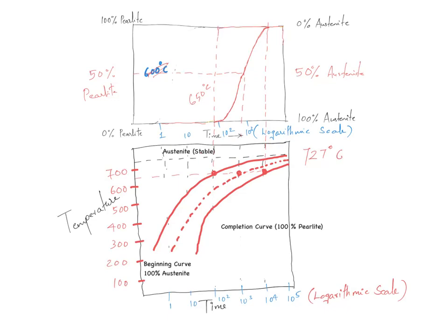The logarithmic scale on the x-axis is critical because many of the inferences derived from this diagram strongly depend on understanding it. The left curve represents the start of transformation (100% austenite), the right curve represents completion (100% pearlite), and a 50% transformation line lies in between. Above 727°C, austenite is stable; transformation only occurs below that eutectoid temperature.